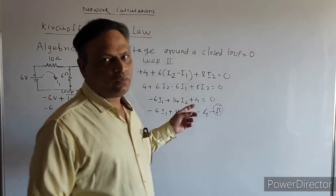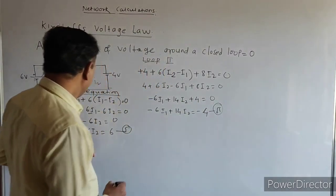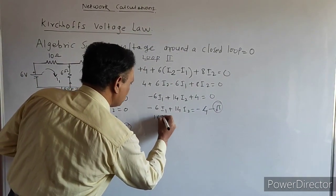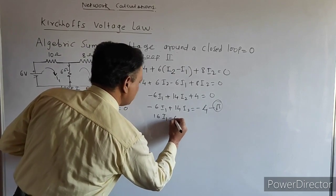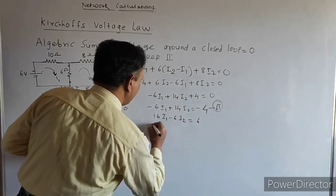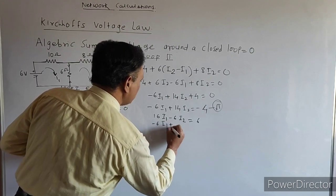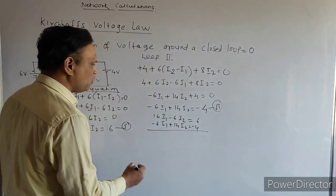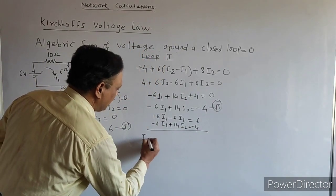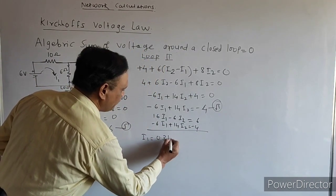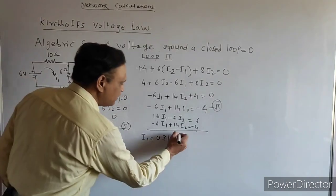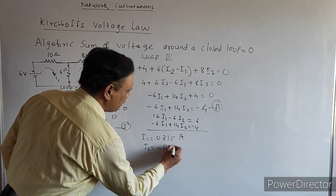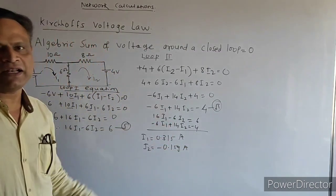Solving equations 1 and 2 simultaneously: 16 I1 minus 6 I2 equals 6 and minus 6 I1 plus 14 I2 equals minus 4. Solving, we get I1 equals 0.315 ampere and I2 equals minus 0.159 ampere.